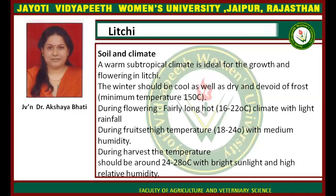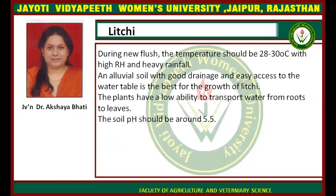During fruit set, high temperature of 18 to 24 degrees centigrade with medium humidity is required. During harvest, the temperature should be 24 to 28 degrees centigrade with bright sunlight and high relative humidity. During the flush — when new growth comes — it should be 28 to 30 degrees centigrade with high relative humidity and heavy rainfall.